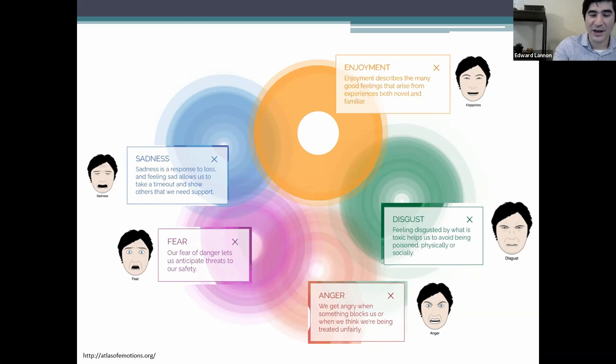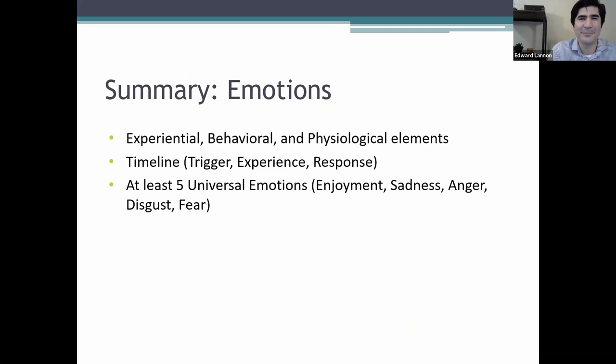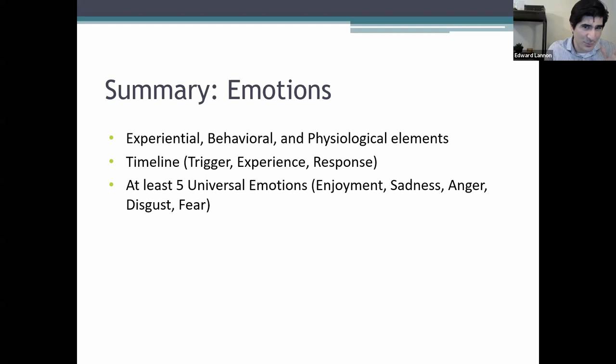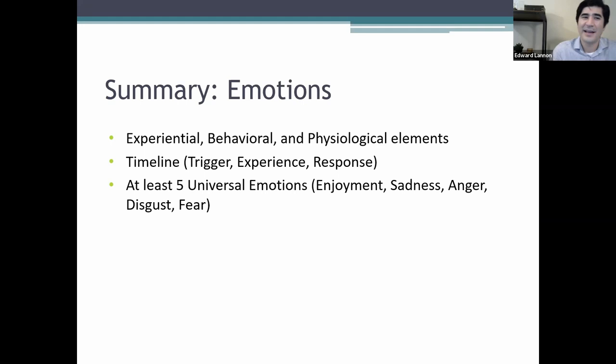To summarize emotions: they have several elements — experiential, behavioral, and physiological. Emotions are elicited by a trigger; they function on a timeline. Something provokes the emotion, then you experience it (experiential and physiological elements), then you have a response (behavioral component). We know there are at least five universal emotions: enjoyment, sadness, anger, disgust, and fear. There might be many more, but we still have research to do.